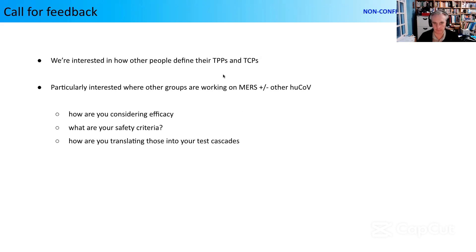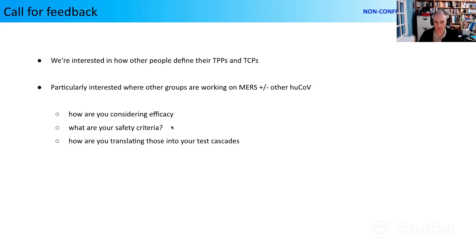This is my formal call for feedback. If you're drawing up TPPs and TCPs for your projects in AVID, we'd love to talk to you about how you do that. Especially if you're working on MERS and the other human coronaviruses — SARS-MERS is our front-running project. I'm interested in how you're considering your efficacy targets, your safety criteria — do you think we've been too harsh or too lax? And how are you doing the translation of these targets into your actual test cascades?